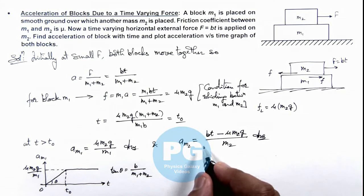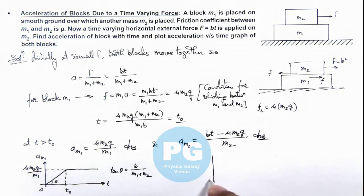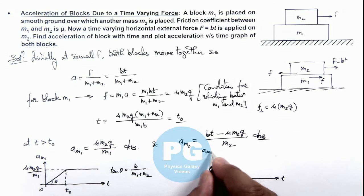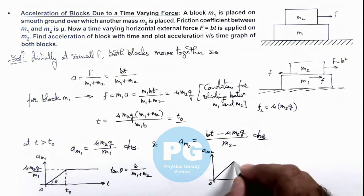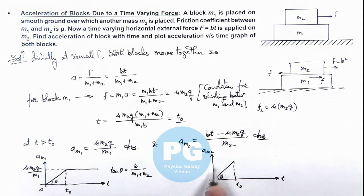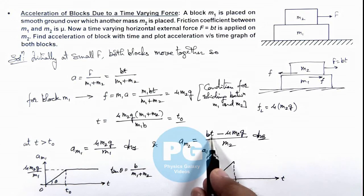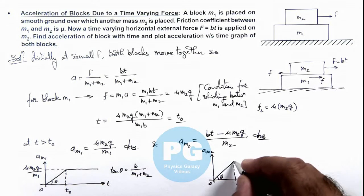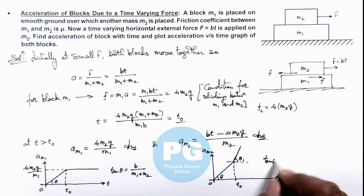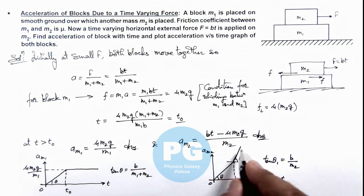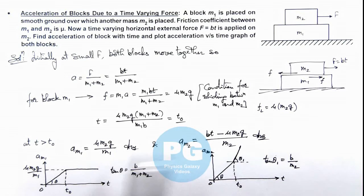Similarly, we plot the graph for acceleration of m2. From zero to t0, the acceleration of m2 is exactly the same as m1 since both blocks were moving together, so the same linear profile applies and the slope angle is also theta. Beyond t0, the acceleration of m2 is given by (b/m2) × t − mu × g, meaning it is again linearly growing but with an increased slope. The new slope angle theta1 satisfies tan(theta1) = b / m2. These are the acceleration-time plots and the expressions for acceleration as functions of time for blocks m1 and m2.